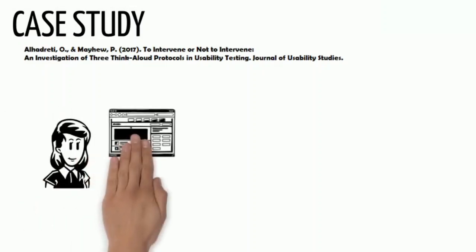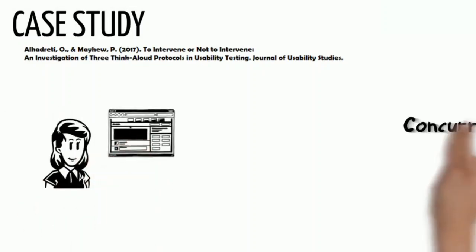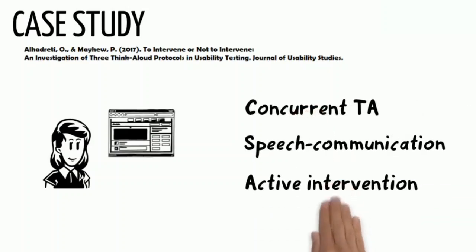A study of Al-Hadridi and Mayhew in 2017 compared the three types of Think Aloud methods. The participants evaluated the usability of a library website using either the concurrent Think Aloud, speech communication, or active intervention method.